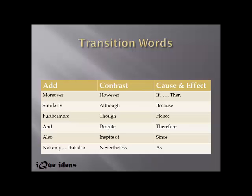Words like 'moreover,' 'similarly,' 'furthermore,' 'also,' and 'not only but also' add to previously mentioned ideas. Words like 'however,' 'although,' 'though,' 'despite,' 'in spite of,' and 'nevertheless' show contradiction between two ideas. Words like 'because,' 'since,' and 'as' are reason markers — they help us understand the reason. Whereas 'hence' and 'therefore' help us understand that there is an effect. So every conjunction and transition word has a particular job to do.